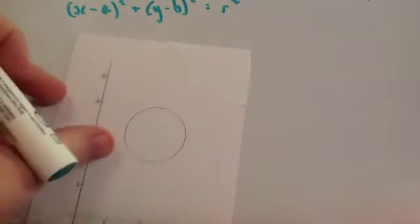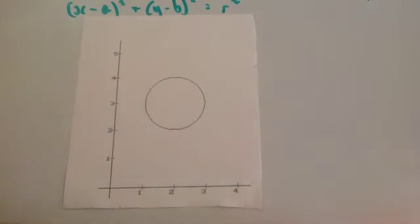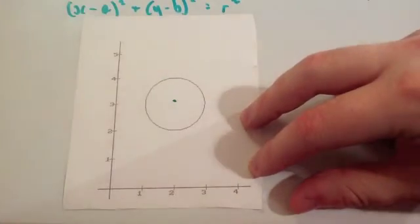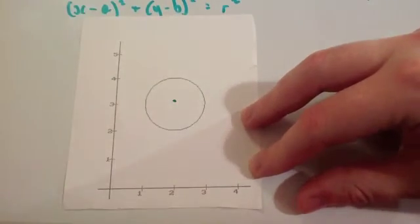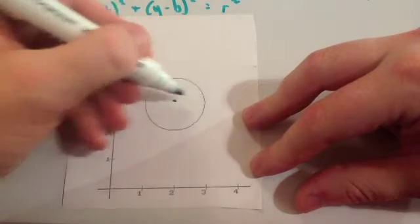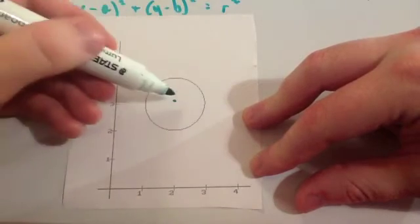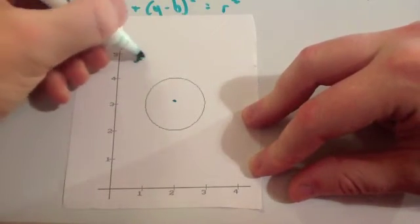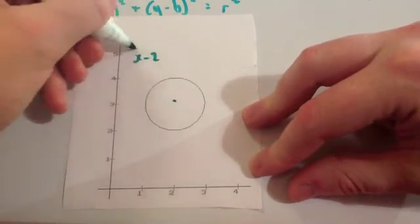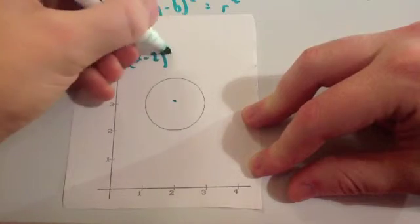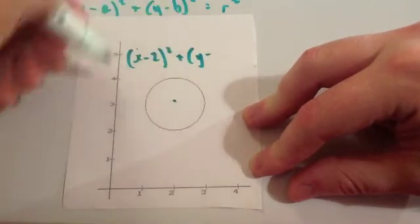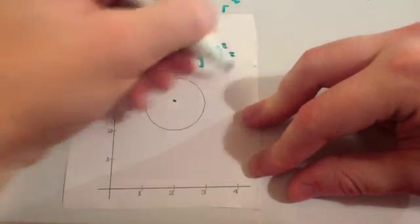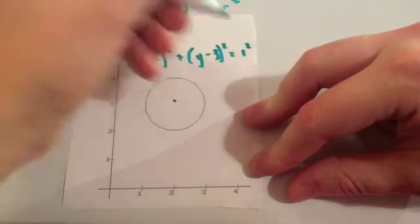Let's have a look at this one. As you can see from this circle, the centre is (2, 3) and it has a radius of 1 — you can see you can go across 1. So the equation of the circle would be (x minus 2) squared plus (y minus 3) squared equals 1 squared, or 1.